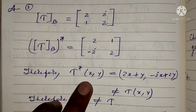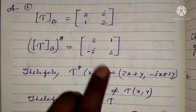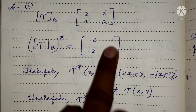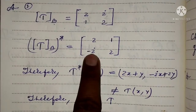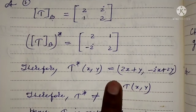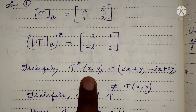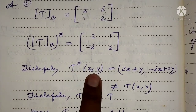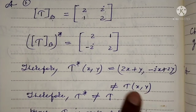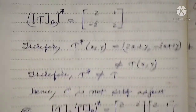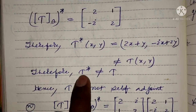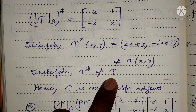Therefore, t* of (x, y) is equal to (2x + y, -ix + 2y). So we can see that t* of (x, y) is not equal to T of (x, y). So we can see that t* is not equal to T, and the adjoint of T is not equal to T.